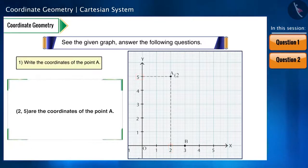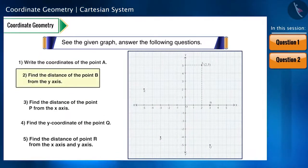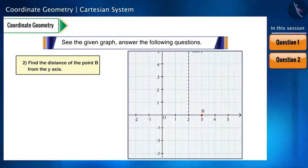The coordinates of the point A are 2 and 5. Second sub-question: Find the distance of point B from the Y axis. Just as we got the coordinates for the first sub-question, we will find the coordinates for the second sub-question as well. And they will be 3, 0.